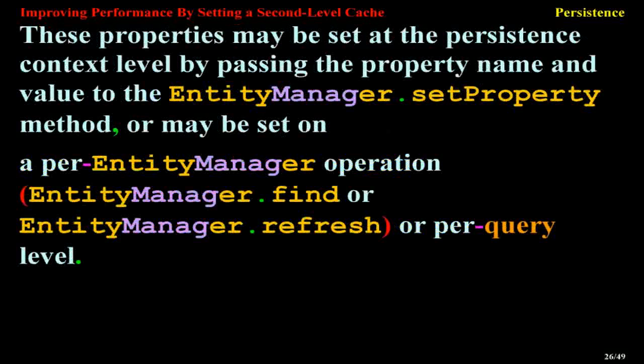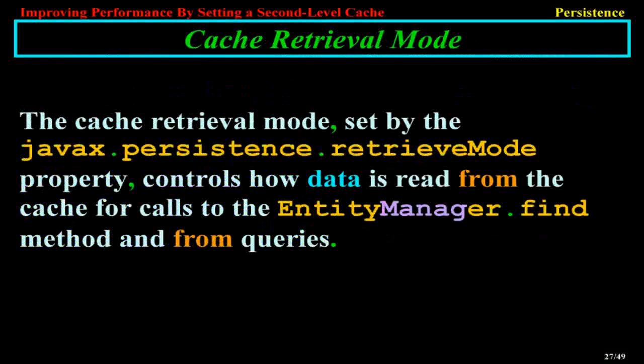These properties may be set at the persistence context level by passing the property name and value to the EntityManager.setProperty method, or may be set on a per EntityManager operation — EntityManager.find or EntityManager.refresh — or per query level.